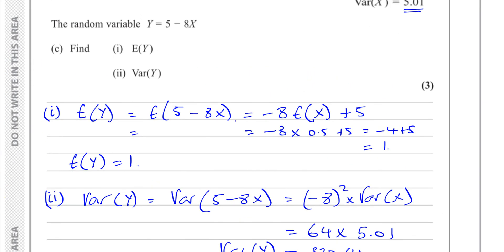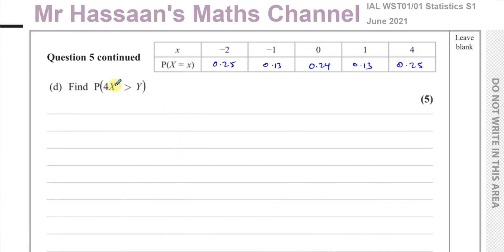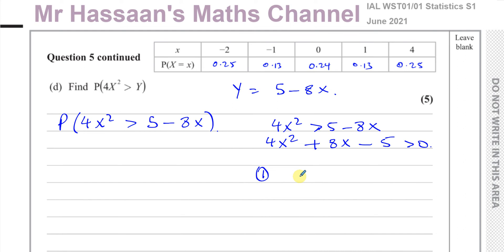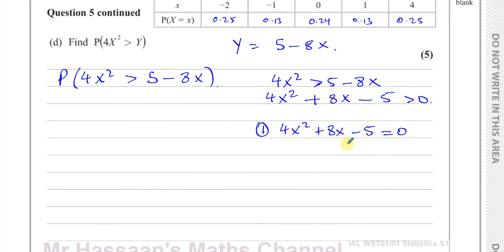Now for part D. Find the probability that 4X squared is greater than Y. Since Y equals 5 minus 8X, we need the probability that 4X squared is greater than 5 minus 8X. I'll solve this inequality by bringing everything to one side: 4X squared plus 8X minus 5 is greater than 0. First I'll find the critical values by solving where this equals 0 — it's a quadratic.